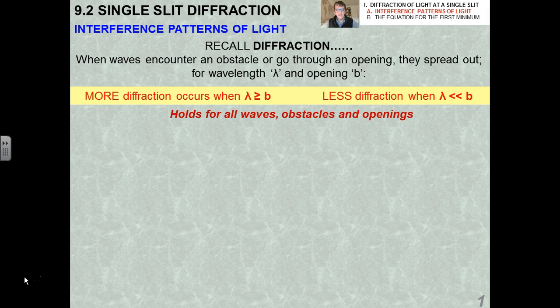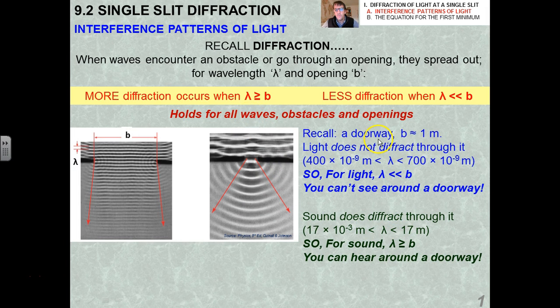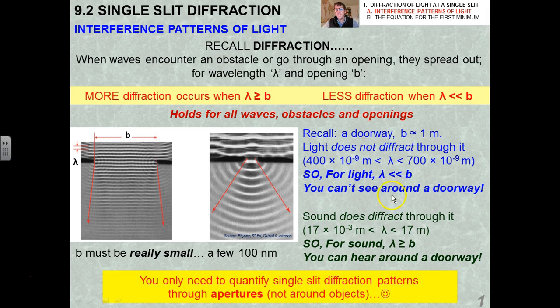It's more just the conceptual notions that you're going to have to really focus on. So recall what diffraction is. Diffraction is the spreading out of waves as they either go around an obstacle or through an aperture or opening. And we saw before that we get very little or no diffraction when the opening b is much wider than the wavelength. If b and the wavelength are on the same order of magnitude or very close together, you're going to get much more diffraction.